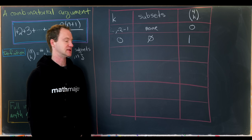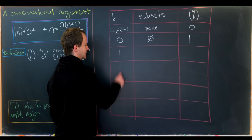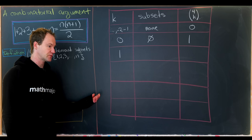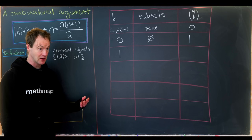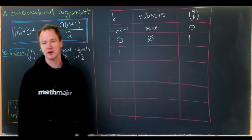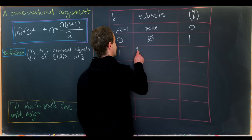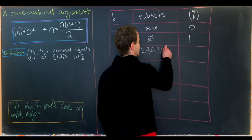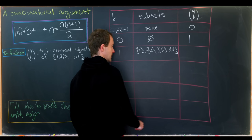Now let's go up to one-element subsets, the case when k equals 1. There's a nice way to form one-element subsets — just take the singletons of the elements of the set. Since our set is {1, 2, 3, 4}, we have singletons {1}, {2}, {3}, and {4}. Those are our four subsets with one element, making 4 choose 1 equal to 4.